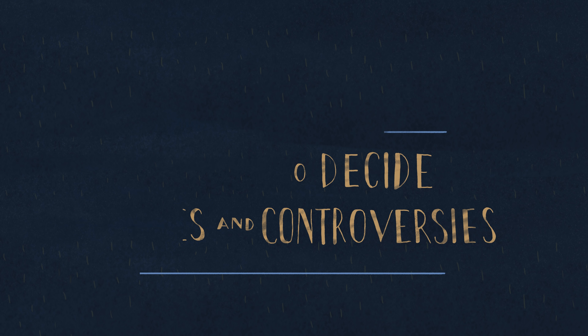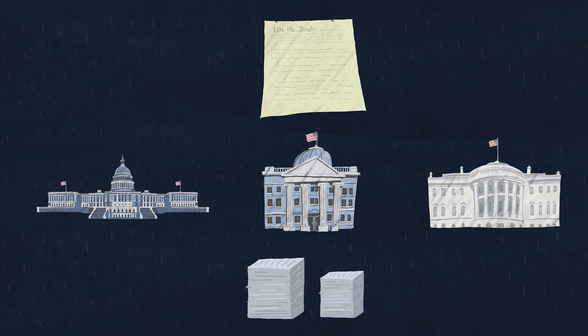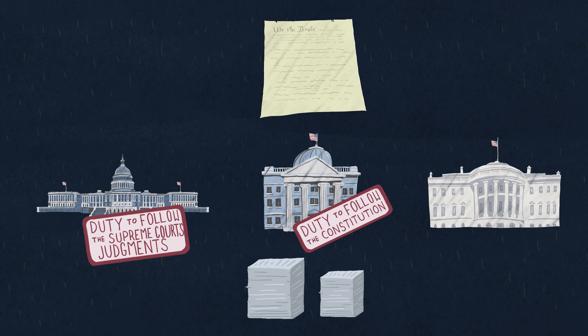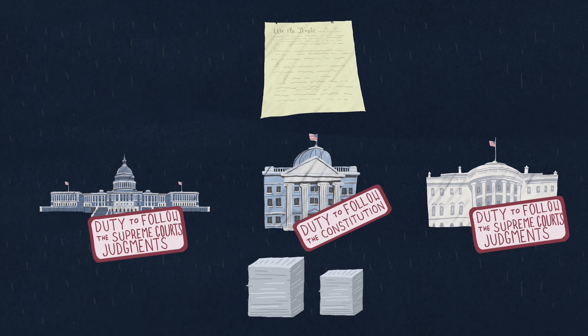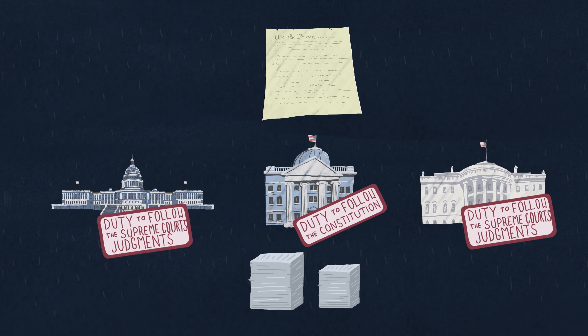When a case comes before the court and a conflict exists between the Constitution and a statute, the Supreme Court has no choice but to follow the higher law of the Constitution — that is its duty to follow the law. This does not mean that the Supreme Court's opinions, in which they justify their decisions, need to be followed by all the other branches of government as though they were a statute unto themselves. What needs to be respected are the judgments of the Supreme Court. The rule of law requires that the other branches of government respect those judgments, but that's not the same thing as adhering to the opinions of the justices when they justify their judgments.